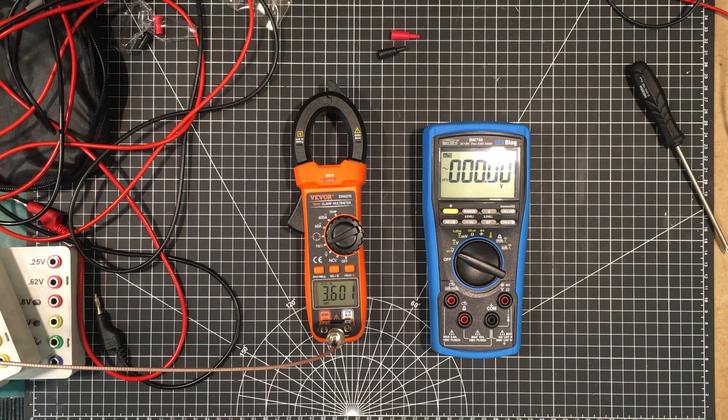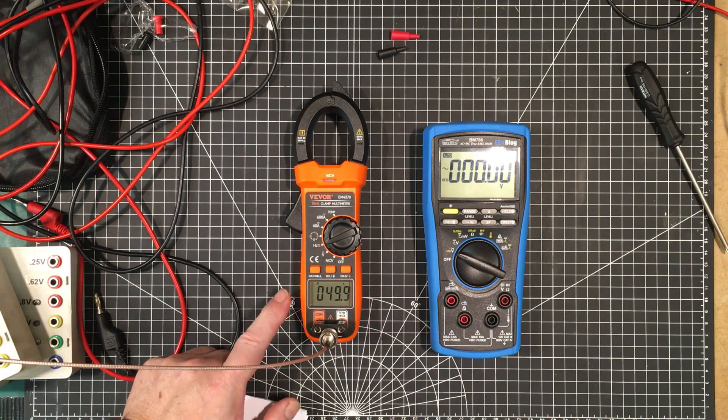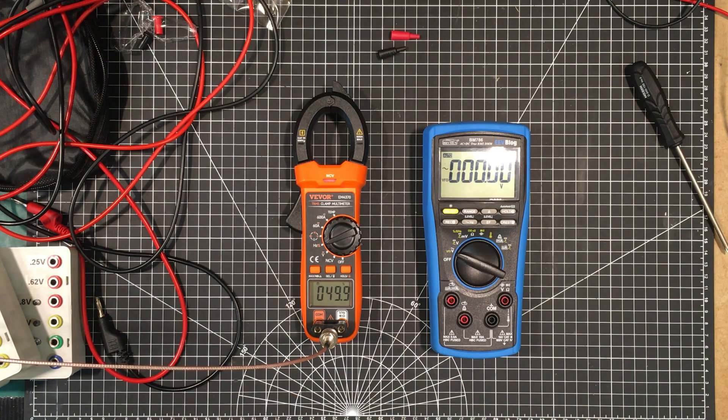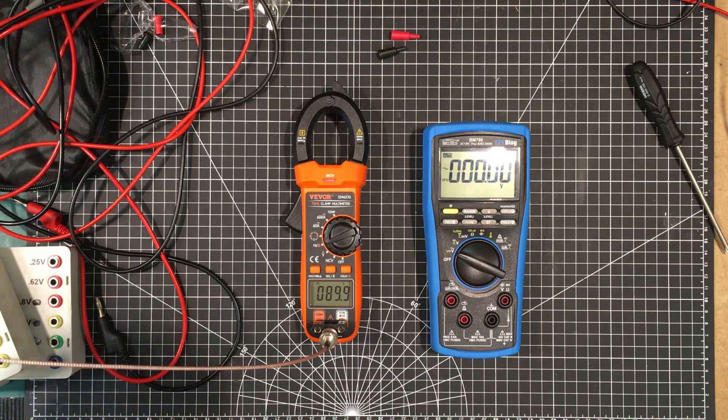Let's bring it back down to one kilohertz again. I'm going to check to see if it will do the duty cycle. So we're at 50%, it's coming up at 49.9, and let's try 10%. Okay, 90%. That's pretty good. Well, that checks out.